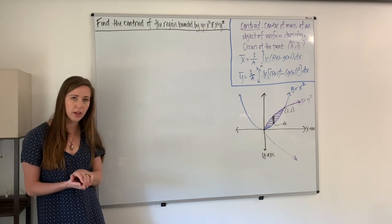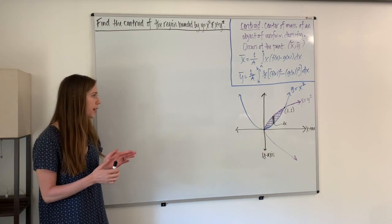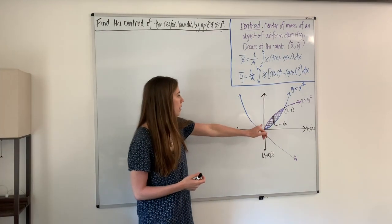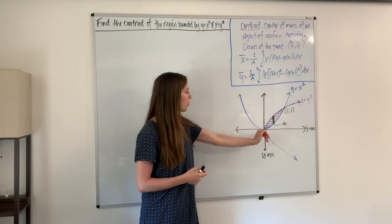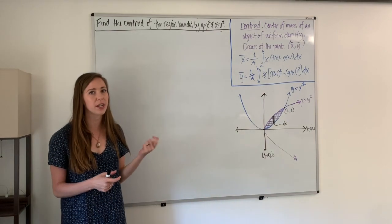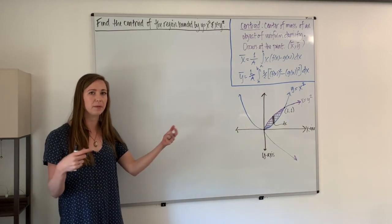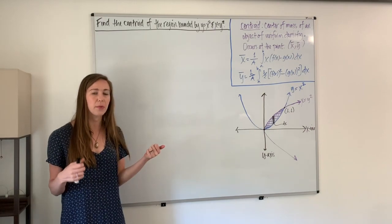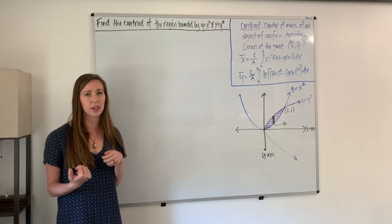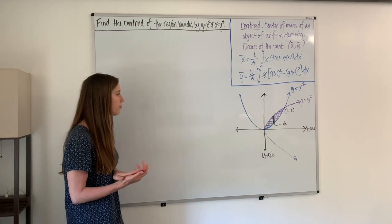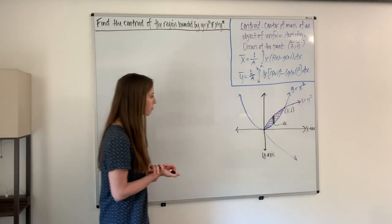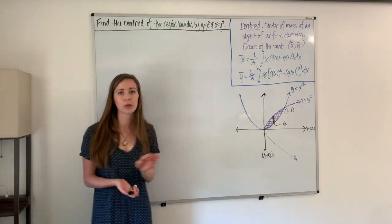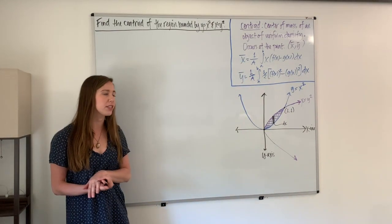We're given two curves: y equals x squared and x equals y squared. We want to find, in the region between these two curves, the place where — if we had a physical shape — we could balance it on something like a pen or a marker.